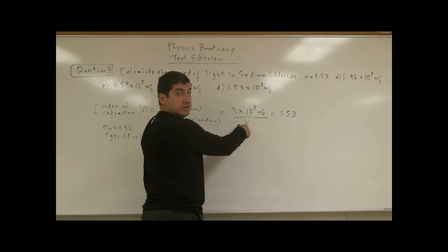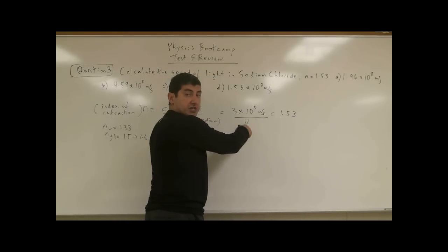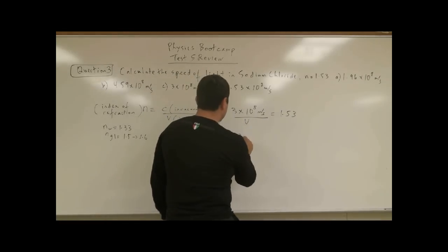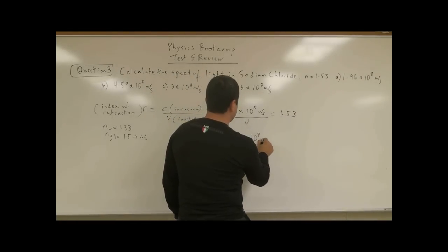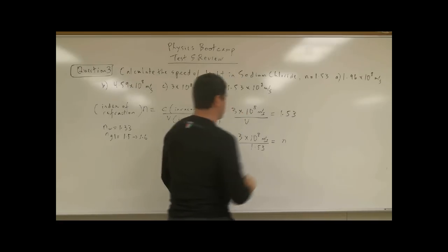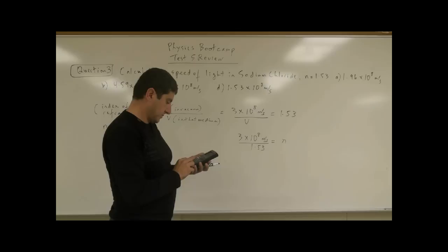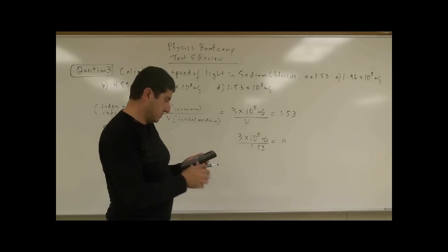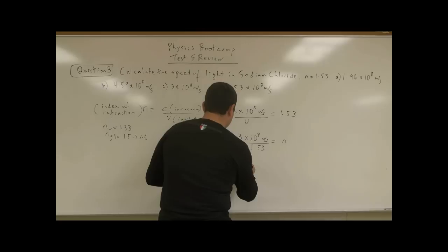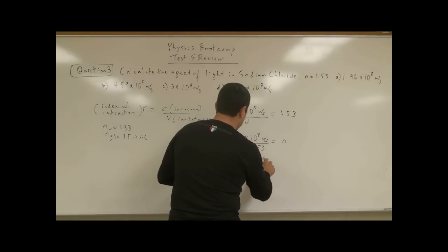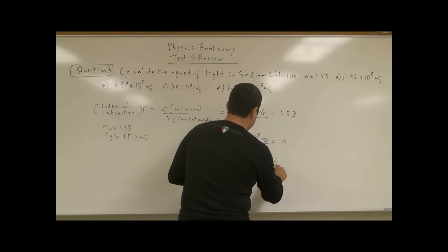Well, the velocity of light in that medium is slower than the speed of light in vacuum. 3 times 10 to the 8 meters per second divided by 1.53, that's equal to n. So we divide that. 3 divided by 1.53, you get 1.96 times 10 to the 8 meters per second.